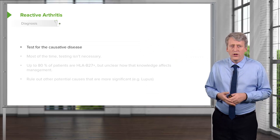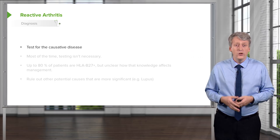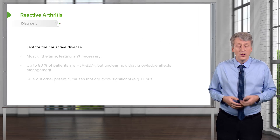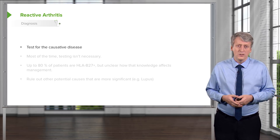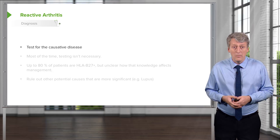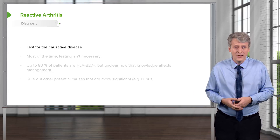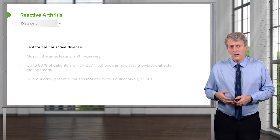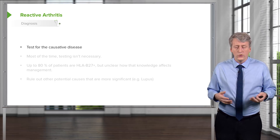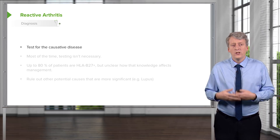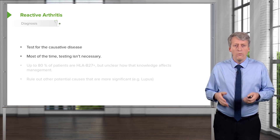The diagnosis of reactive arthritis is usually made clinically. If something is still present, you could test for the causative disease — for example, with chlamydia, a urine chlamydia test may still be positive, and unless treated, will continue to be positive. In fact, it may be positive even after treatment, and retreatment might be needed. For pathogens like campylobacter, the bug is usually long gone by the time reactive arthritis develops, so testing isn't possible. Most of the time, we don't bother with testing.